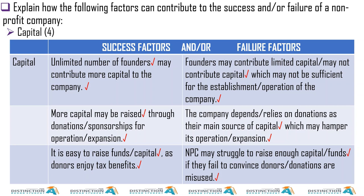When it comes to the factors we consider before choosing a form of ownership, we look at capacity, membership, the name, management, tax, capital requirements, division of profits, and legislation — as in, is it a personal legal entity or separate legal entity? We also look at liability: is it limited or unlimited? And we look at continuity — is there continuity or not?